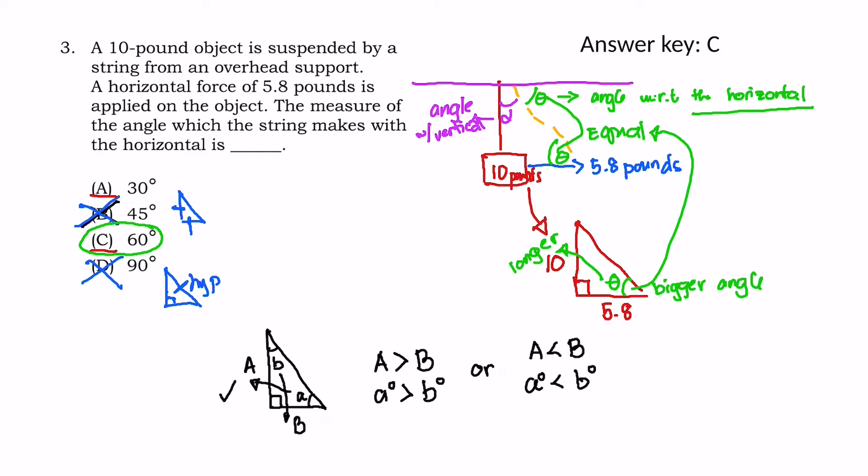Remember, in the right triangle, we have 90 degrees. So this would be like 60 degrees. But remember, we have 90 degrees, 60 degrees, and the smaller one should be 30 degrees. So the best answer there is 60.